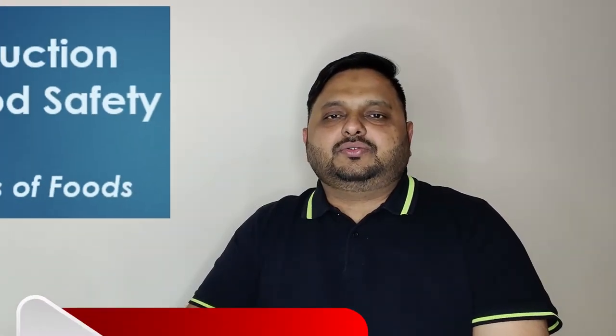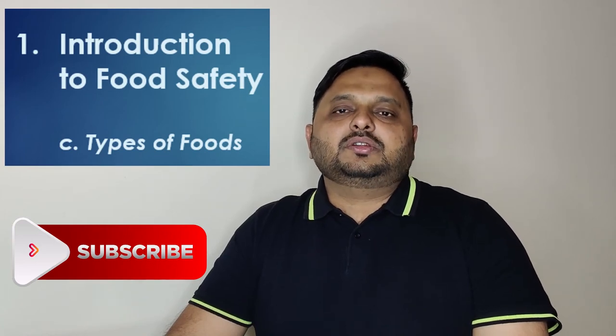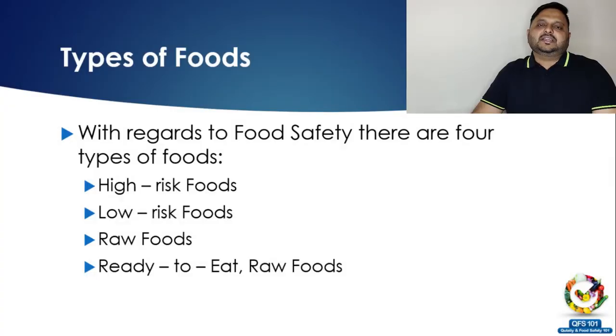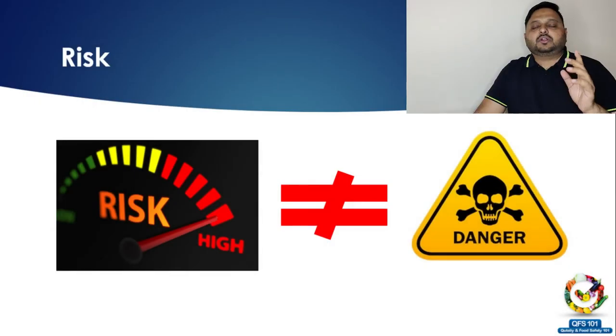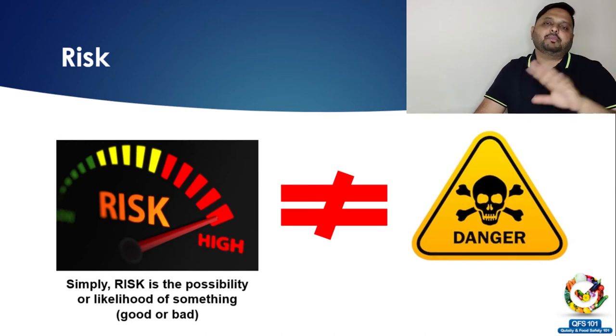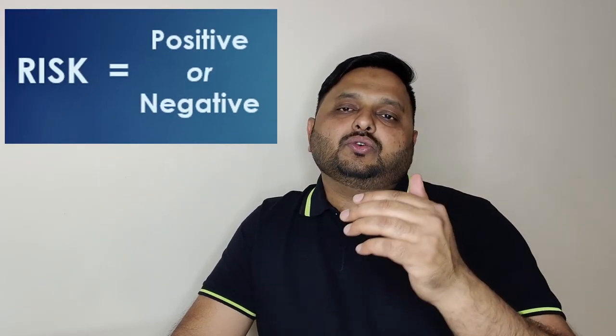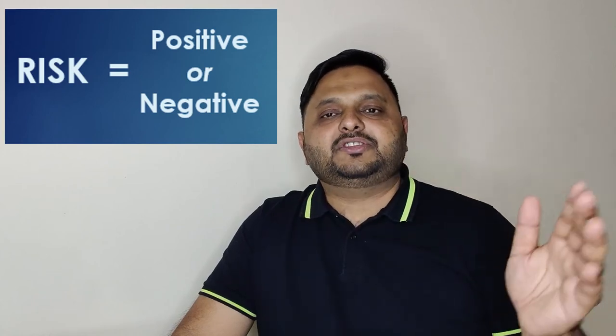In this third and final section of the introduction to food safety, we will talk about four types of food with regards to food safety: high risk foods, low risk foods, raw foods, and ready-to-eat raw foods. Before continuing, let's talk about risk. A lot of people have the misconception that risk equals danger, which is wrong. Risk is about the possibility, probability, or likelihood of something happening — it could be good or bad. If you've read ISO 9000 latest edition 2018, it talks about risk as having both positive and negative dimensions.